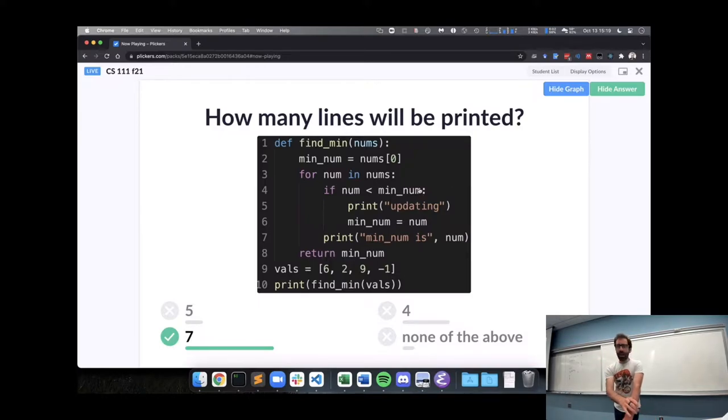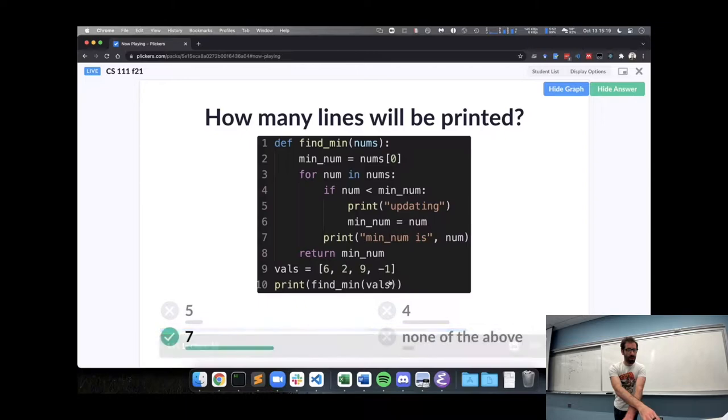One of them, this updating, happens whenever we find a smaller number. This minimum number is, I see that it's inside this loop over all the numbers outside of the if, so it's going to print out once for each of our four numbers. And then I know that we start our minimum at six, so there are two times that it would change. So that's once for each of the list is four, two updates, and then I have to remember that it's printing out what find_min returns for a seventh.